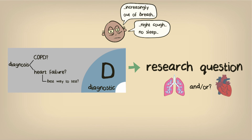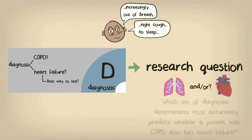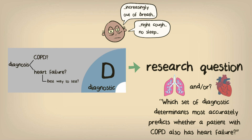More formally, this could be phrased as: which set of diagnostic determinants most accurately predicts whether a patient with COPD with increasing shortness of breath also has heart failure? Where the term 'diagnostic determinants' refers to different pieces of patient information, including their history and test results.